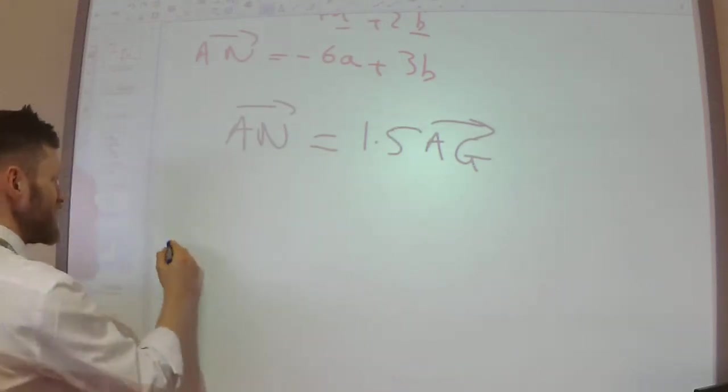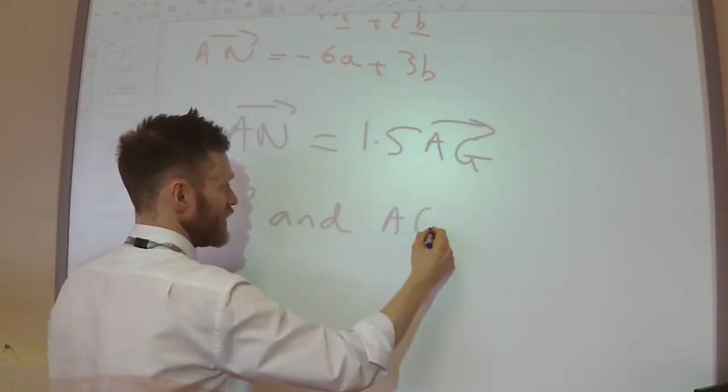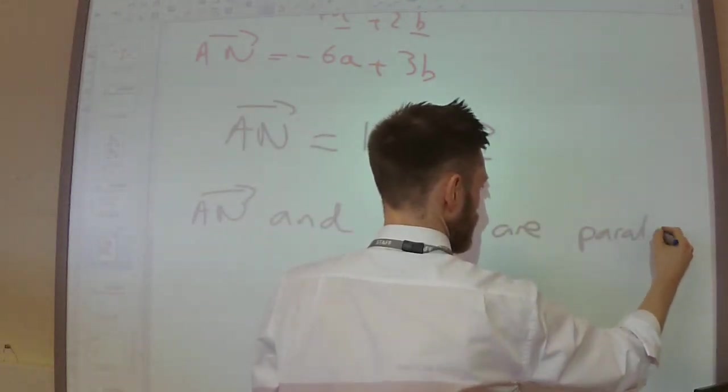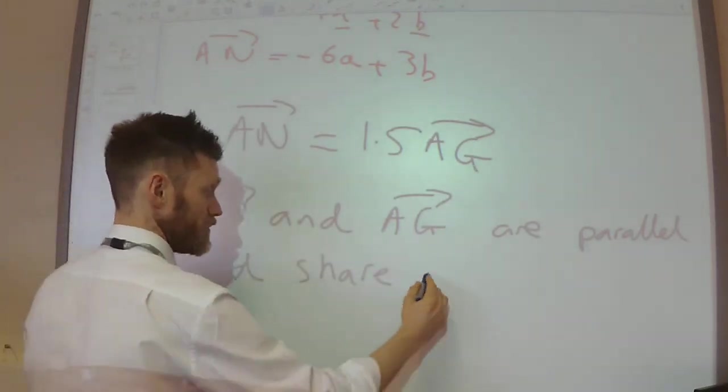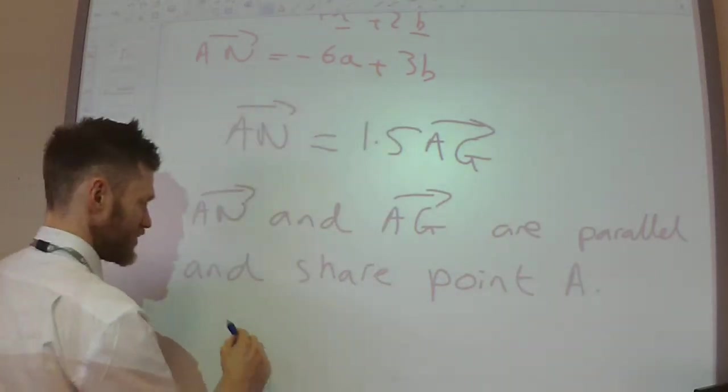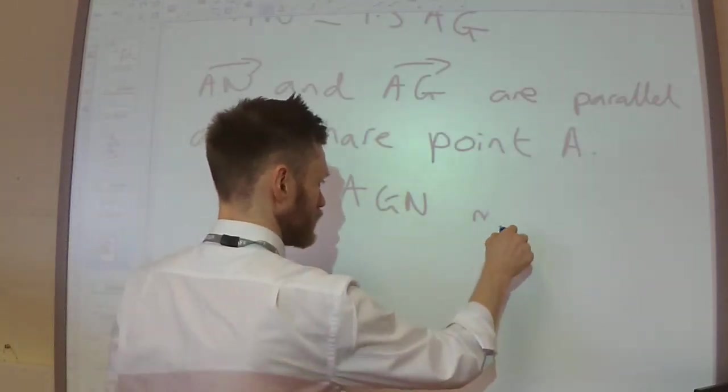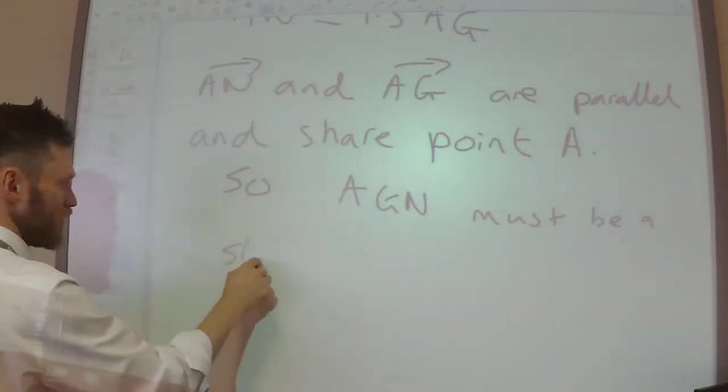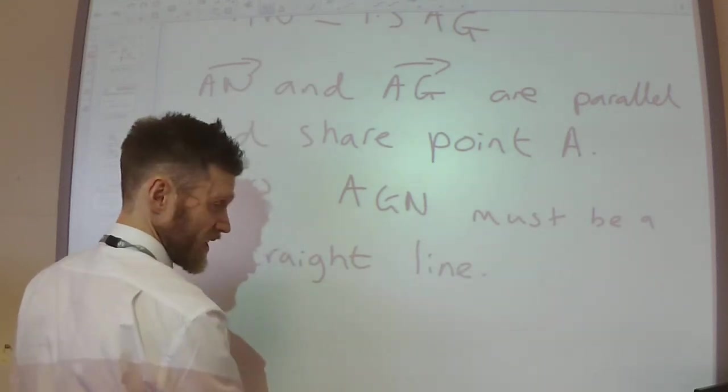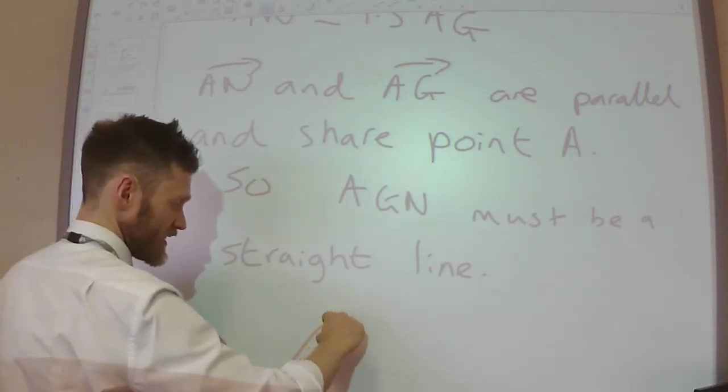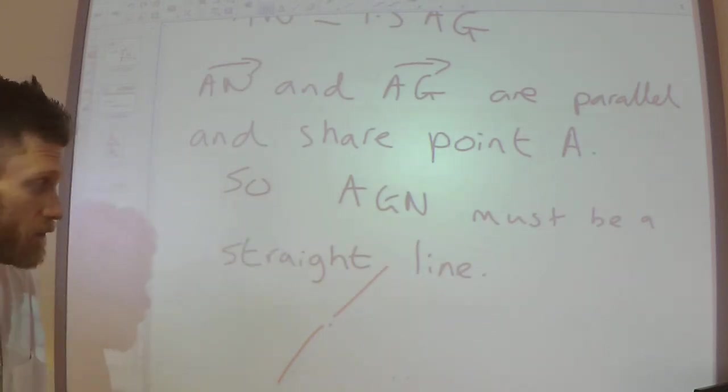Just one of them is bigger than the other one. So now I can write a sentence and say, AN and AG are parallel and share point A, they both go through point A. So A, G, N must be a straight line. There's nothing else it could be. If you've got two parallel vectors and they both go through the same point, then it's just got to be straight. So there we go.